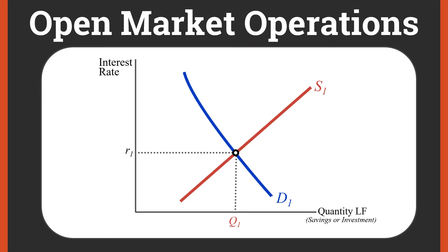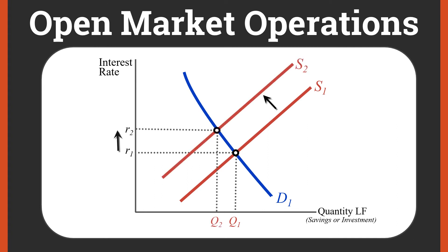The story for restrictive monetary policy using open market operations goes like this. First, the Fed sells bonds. When it sells bonds, this drains reserves from the banking system — the Fed is taking money out of the economy because people are purchasing those bonds from the Federal Reserve with cash. So the Federal Reserve is sucking cash out of the economy, draining reserves from the banking system. What happens then is the supply of loanable funds drops, putting upward pressure on real interest rates.